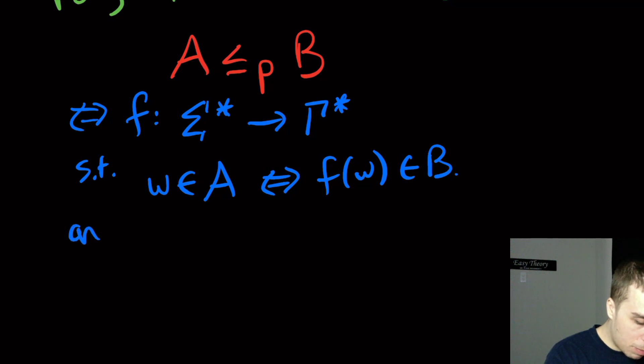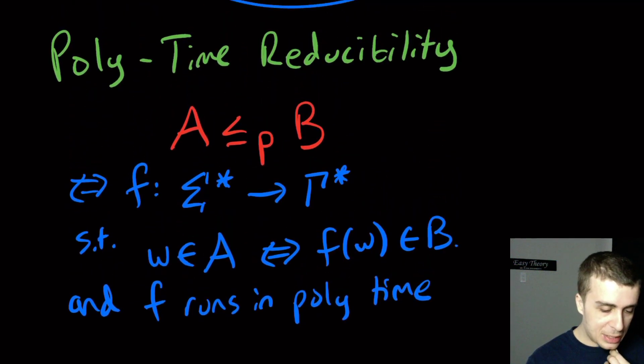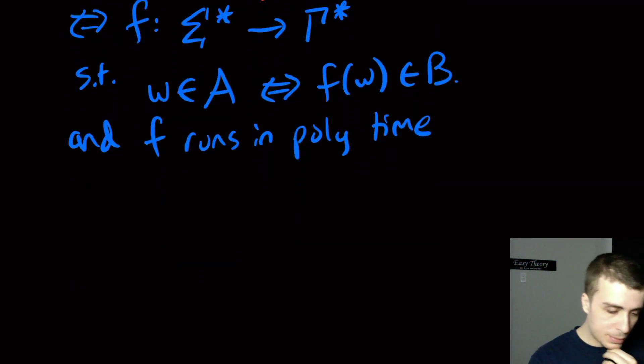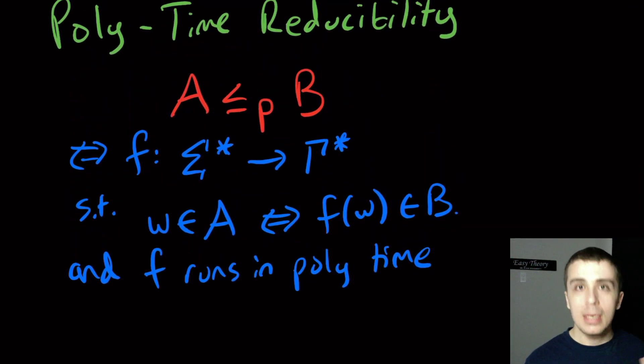And what we have is that F runs in polynomial time. So this isn't exactly right because F is a function, but we mean that we can compute it using a polynomial time Turing machine, deterministic Turing machine, in polynomial time. And that is a notion of reducibility.